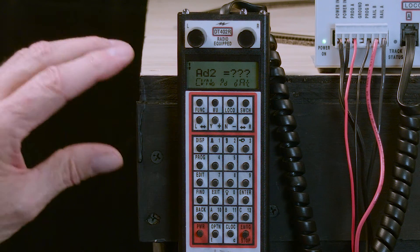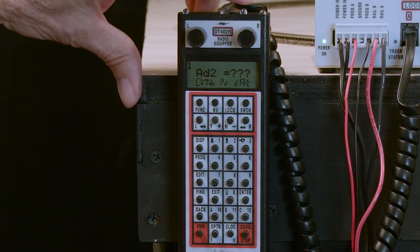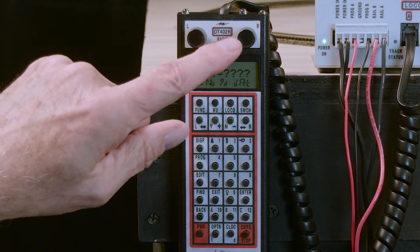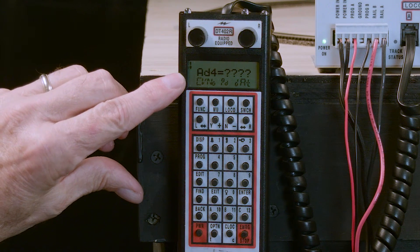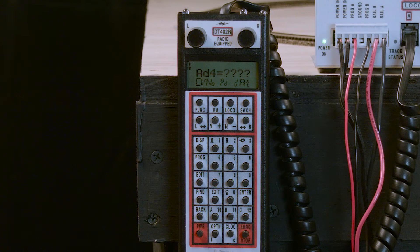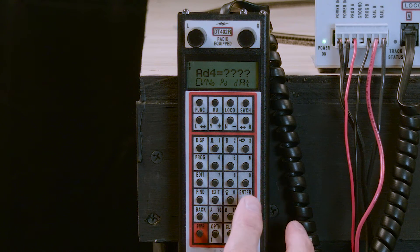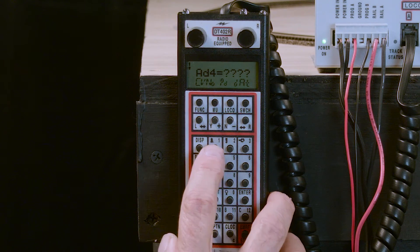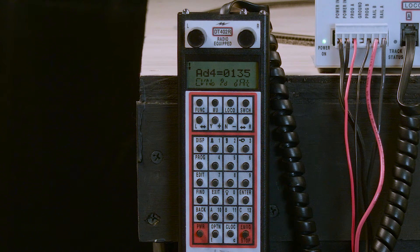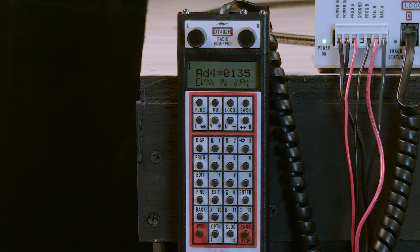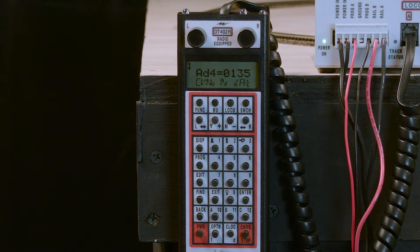So to get to a four-digit address, we go to our throttle and we press one time on the right throttle knob and that brings AD4 into the display. In this case AD4 equals four question marks. We then go to our keypad and press in 135, which is the number that we have decided we want in this locomotive. And get AD4 equals 0135.